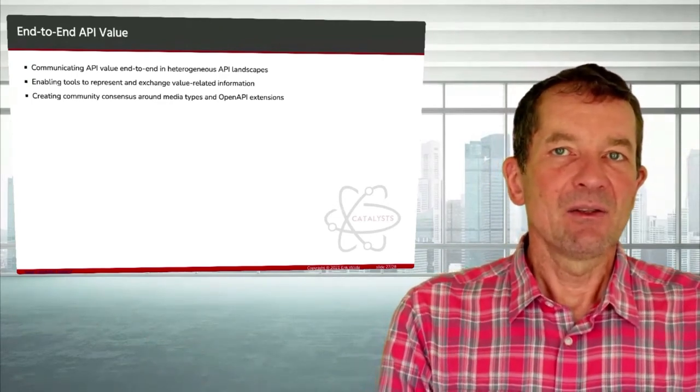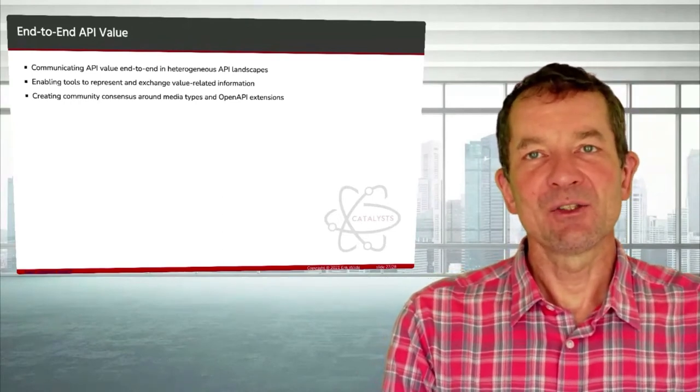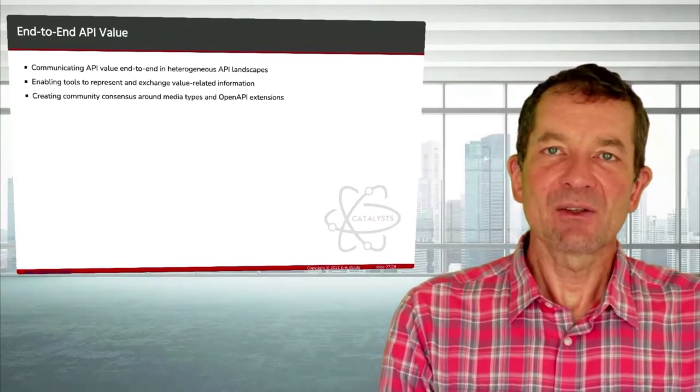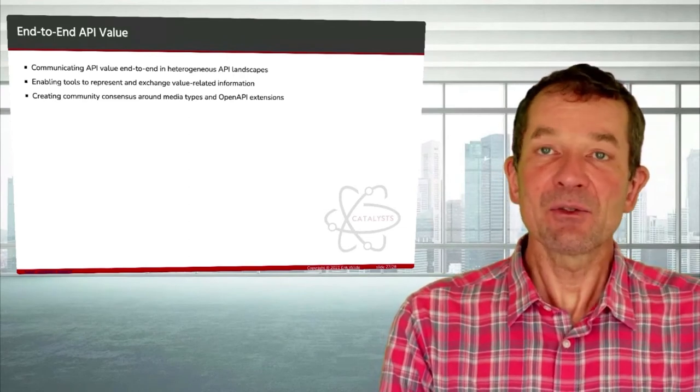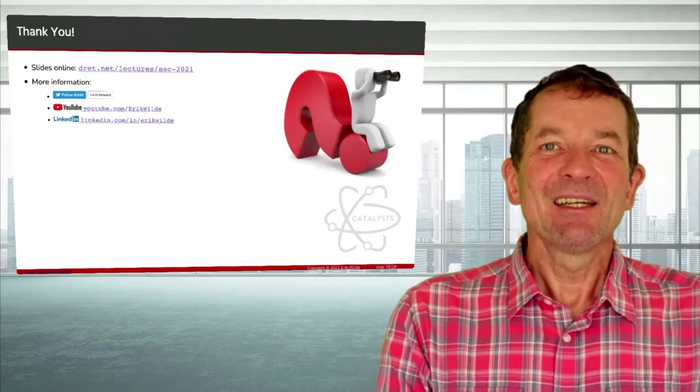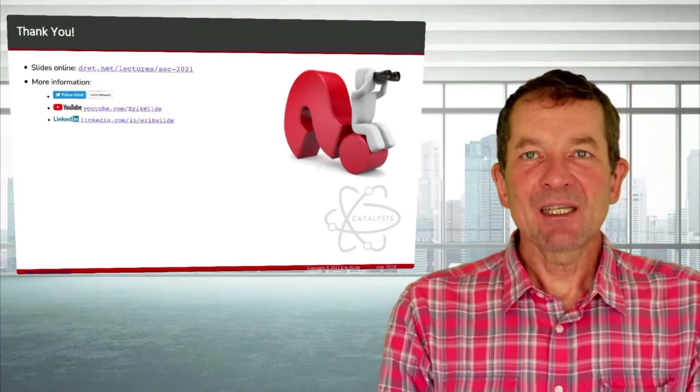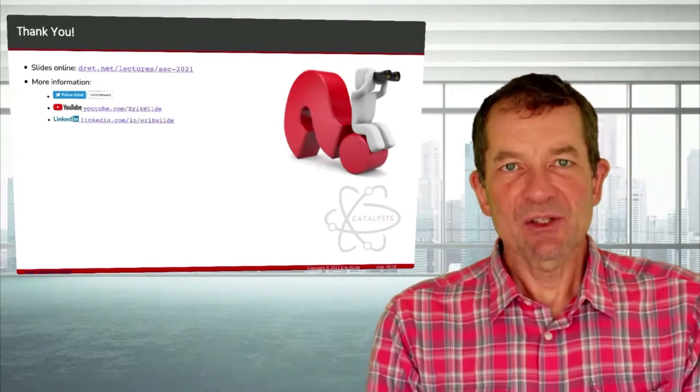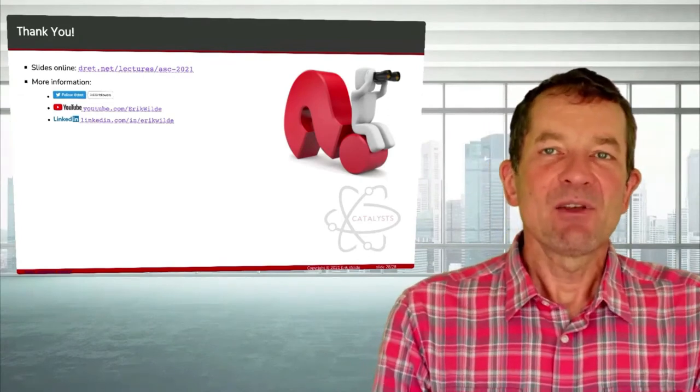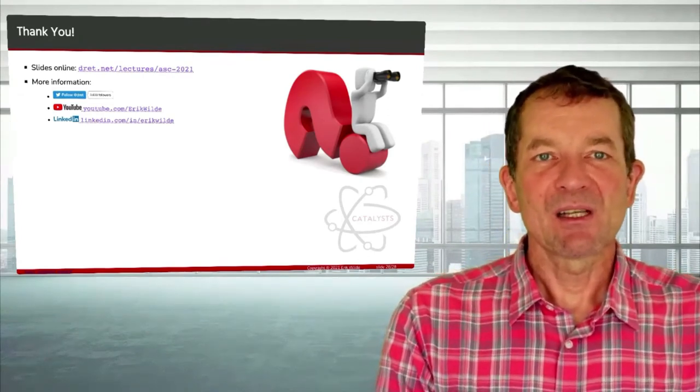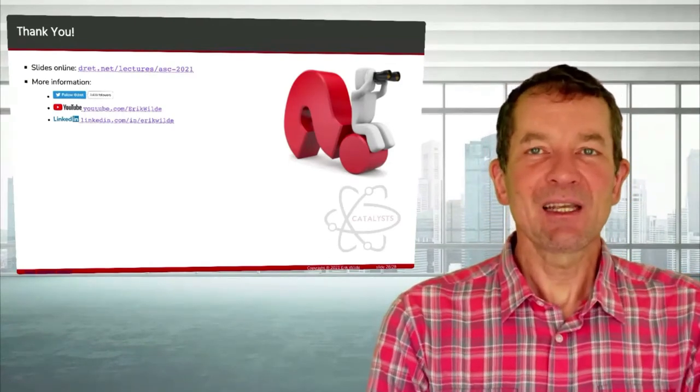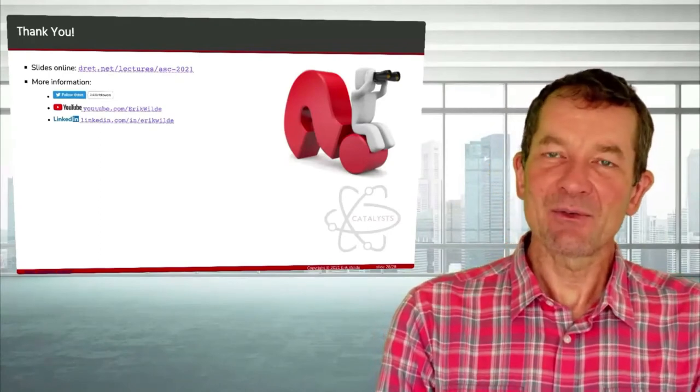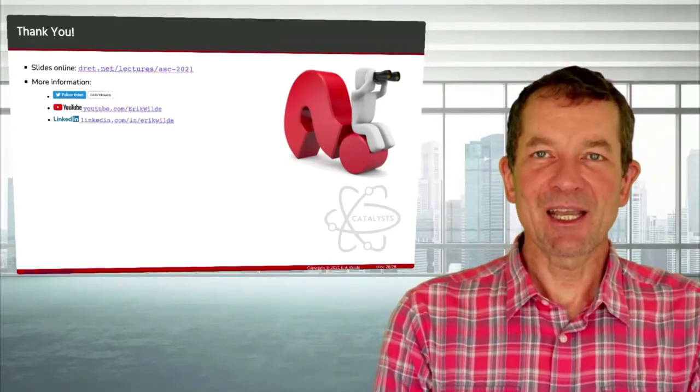We're working on making that part of our tool chain. But ideally, of course, this would be not just our tool chain, but it would be something that others are interested in and support as well. Because then we can start enabling tools to support this information across different tools across the whole API landscape. And definitely the organizations using APIs will start to see some benefits. That's it. Thank you so much for listening. If you want to look at the slides, you can find them here. Thanks very much for listening and enjoy the rest of the conference. All the best from Zurich.